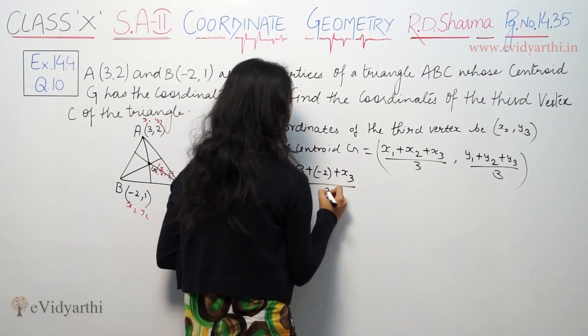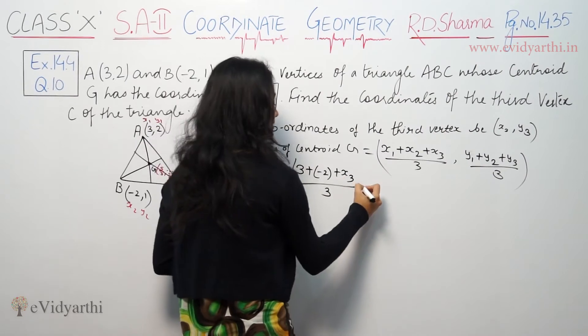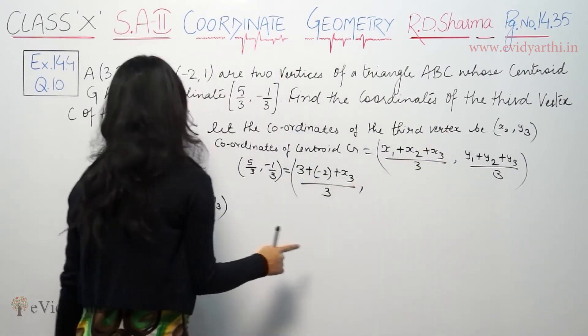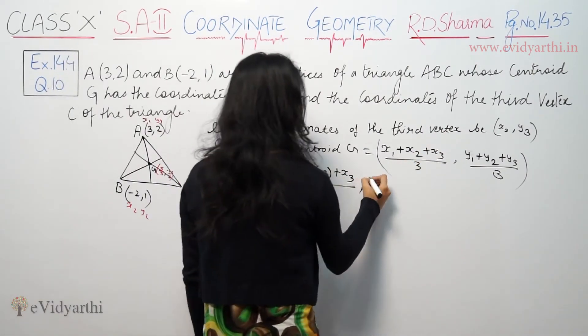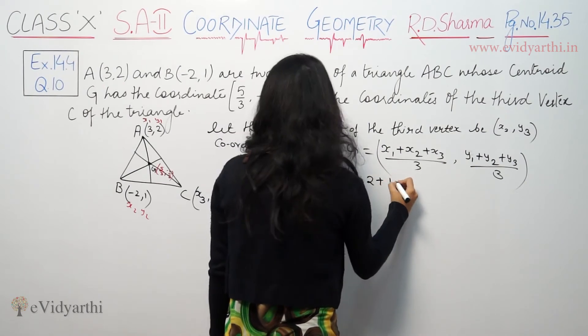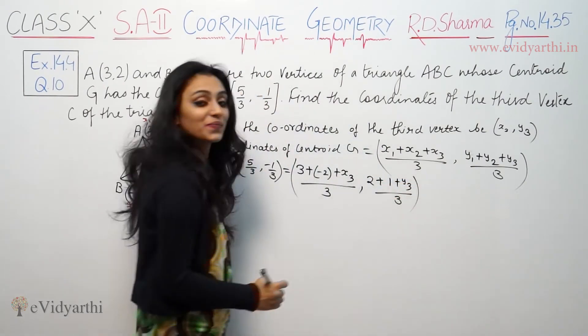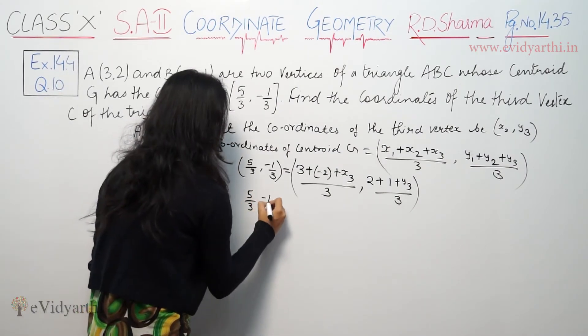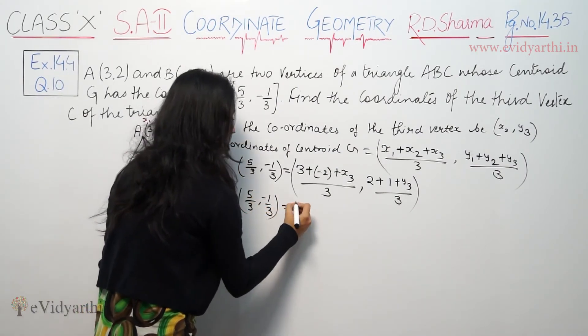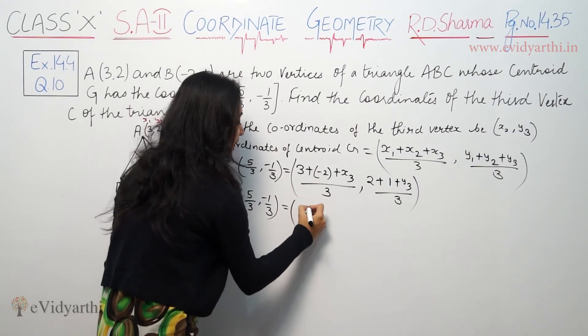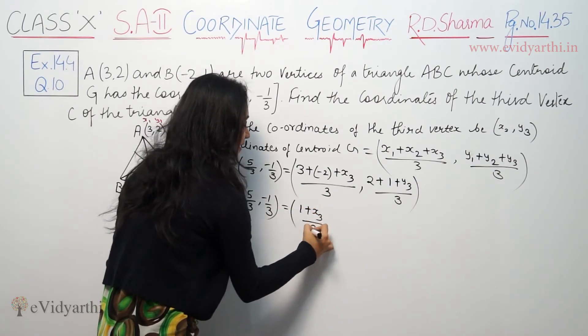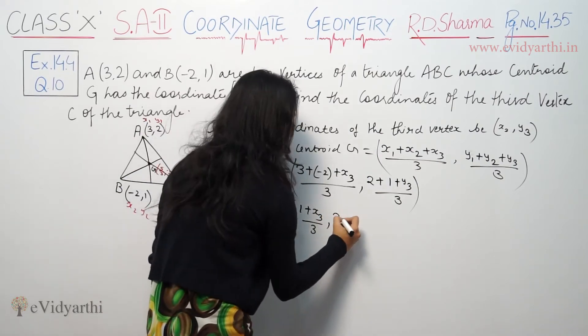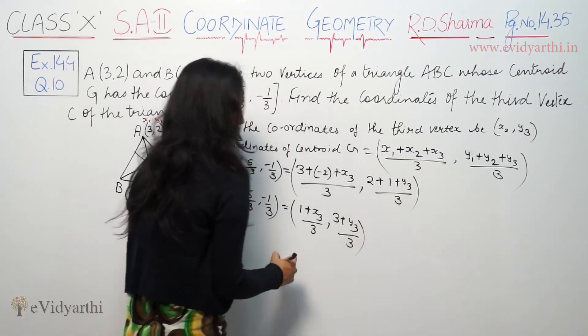Comma, (y1 + y2 + y3)/3. y1 is 2, y2 is 1 plus y3 over 3. So we have 5 by 3, minus 1 by 3. 3 minus 2 is 1 plus x3 by 3, and 3 plus y3 by 3.